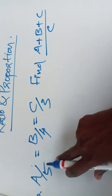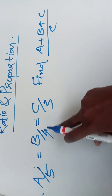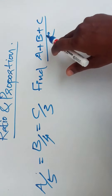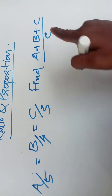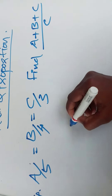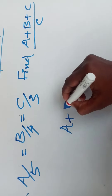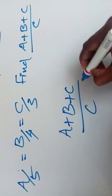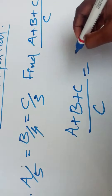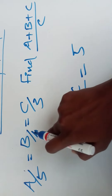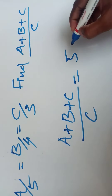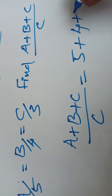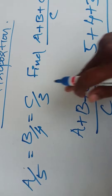We will find a plus b plus c divided by c. We will add a plus b plus c divided by c.